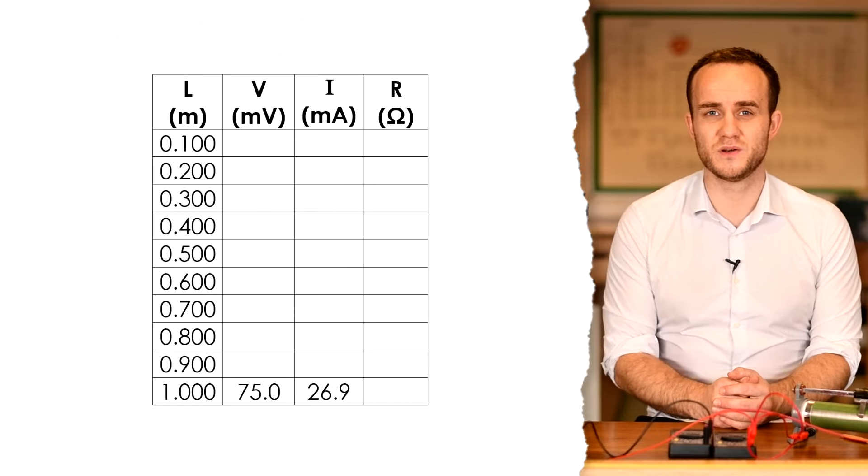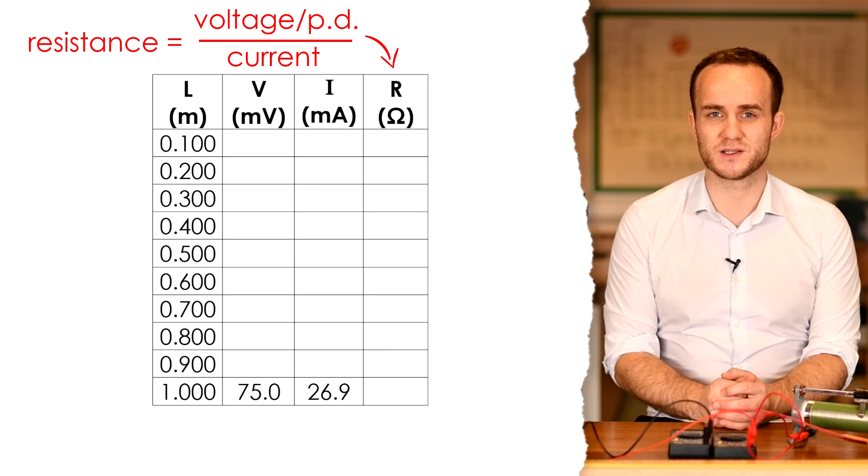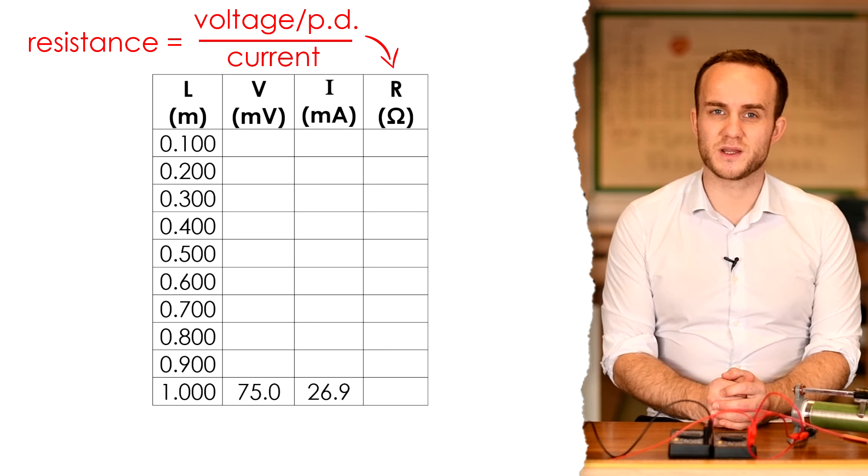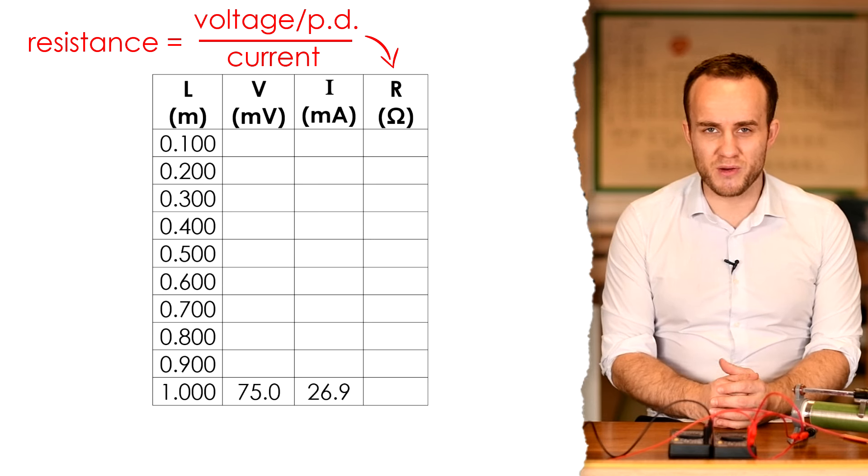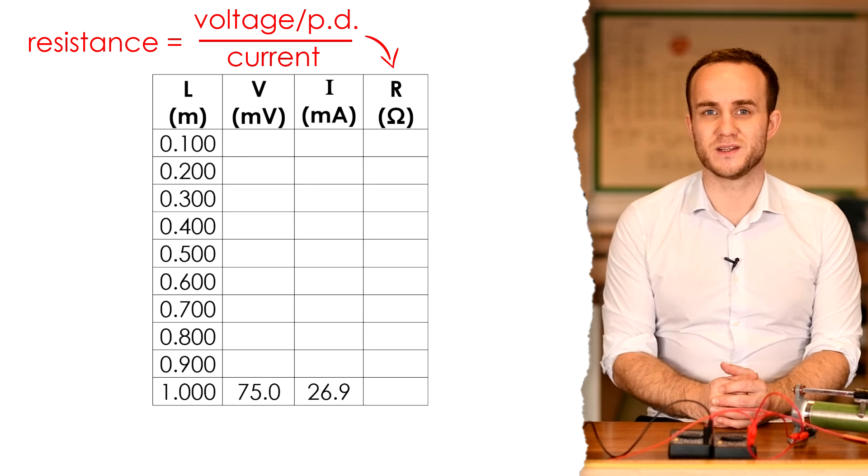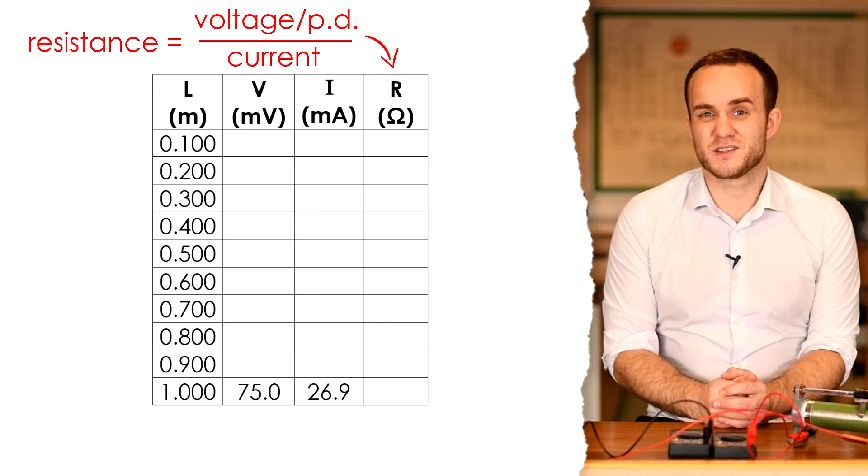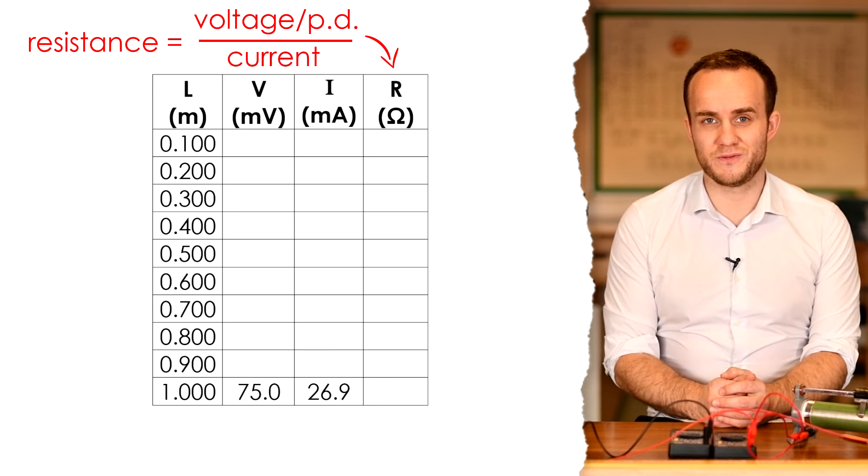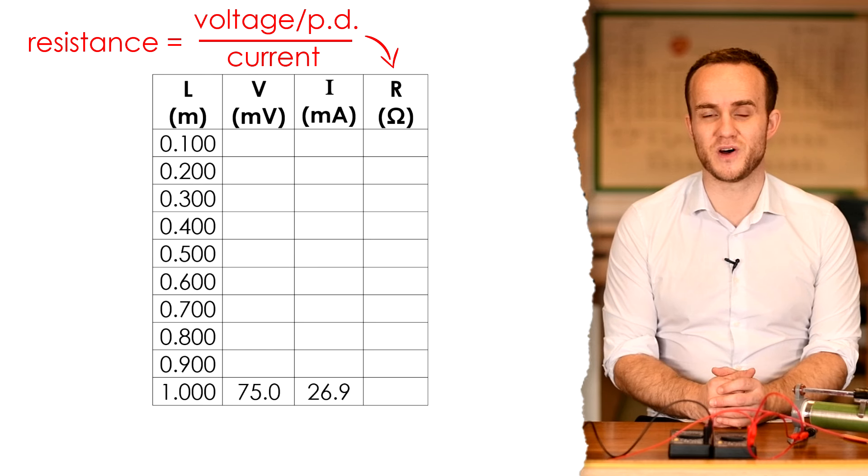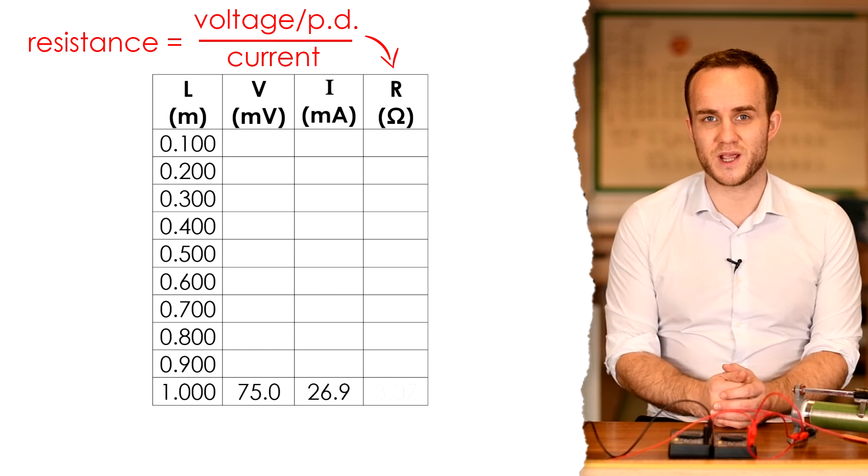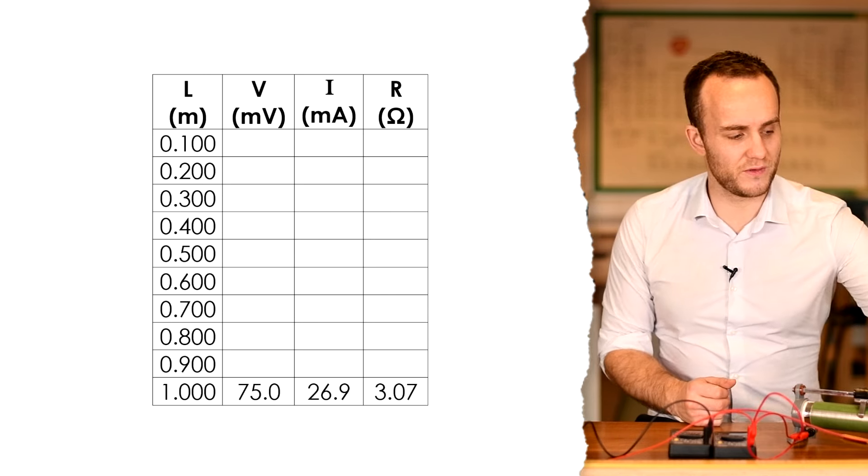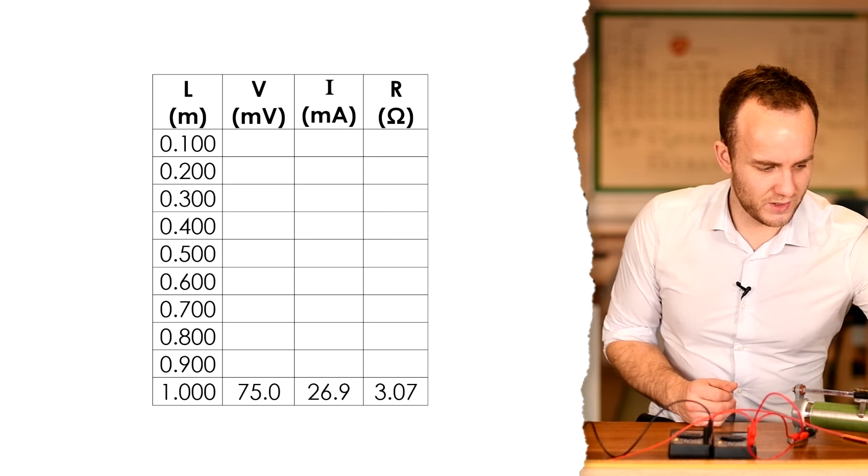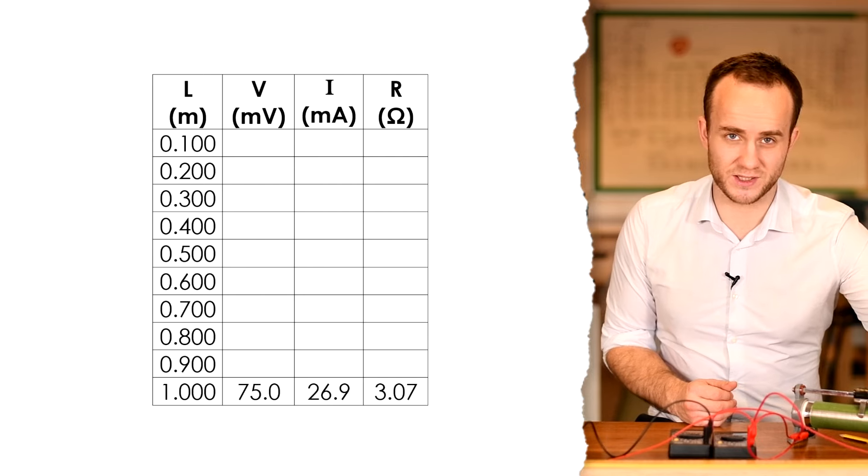Now to find resistance we do PD voltage divided by current according to Ohm's law, but they are in millivolts and milliamps, but it actually doesn't matter because they're both milli, and so that means that they're times 10 to the minus 3, and so that actually just cancels. So if you're in millivolts and milliamps you can just divide one number by the other. So now that I have my resistance for a meter length of the wire, I'm just going to move my voltmeter cable down 10 centimeters and take the readings again.